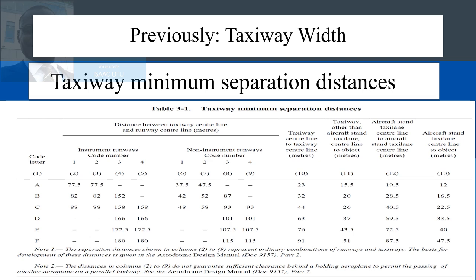If you have a challenge with the codes, refer to my video lecture 7.1. The code of an aircraft on taxiways gives a clue on the maximum wingspan of the aircraft. Remember that the main aim of taxiway separation is to provide enough space to accommodate the aircraft wingspan.